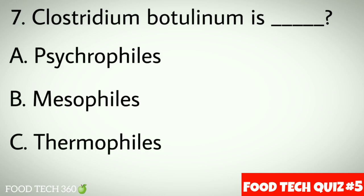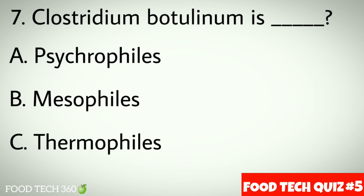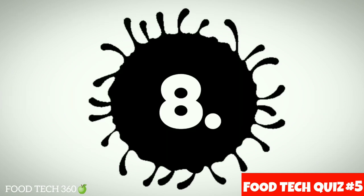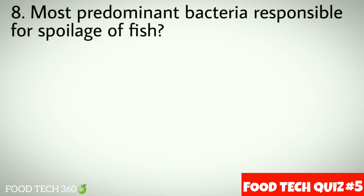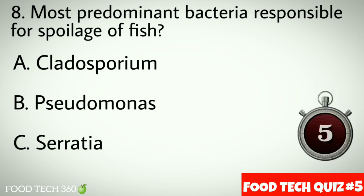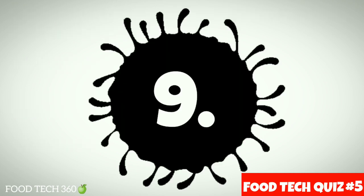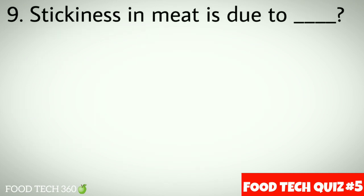Question number seven: Clostridium botulinum is dash. Options: a) psychrophiles, b) mesophiles, c) thermophiles. Correct answer: b) mesophiles. Question number eight: most predominant bacteria responsible for spoilage of fish. Options: a) Alatosporium, b) Pseudomonas, c) Serratia. Correct answer: b) Pseudomonas.